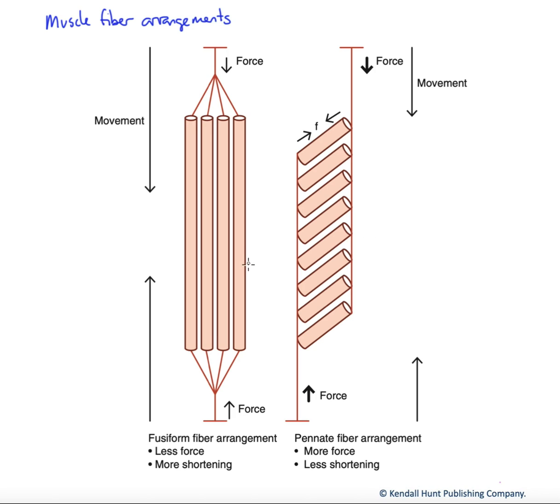So in this case here, we have two different possible arrangements, the most basic of the varieties possible. On the left here, we have what are called fusiform fiber arrangement or fusiform muscle. These are also called parallel fiber arrangements because the muscle fibers shown here in the middle, these long thin cylinders, are running parallel to the direction of the muscle itself.